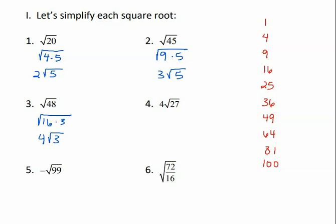For number 4, half of 27 would be 13 and a half. So the next number is 9. Will 9 go into 27? Yes. So let me rewrite this: 27 is the same as 9 times 3. So the 9 gets to come out of the radical as a 3, and the 3 stays under. But we have this 4 that's already outside. If there's a number that's already on the outside of the radical, we're going to multiply it times the number that we bring out of the radical. So that's 4 times 3, which is 12. And the 3 is under the radical, so 12√3 would be our solution.